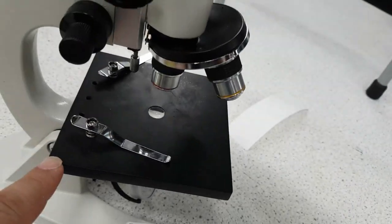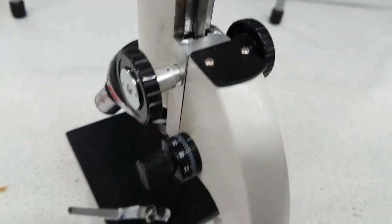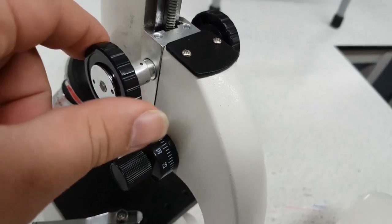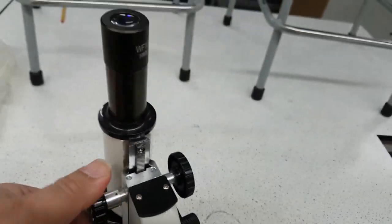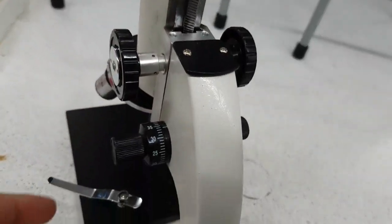This is the stage and you have two pairs of knobs. The first one is the coarse knobs, which basically causes all of this to move up and down by quite a lot.